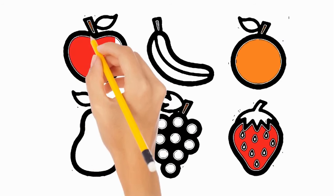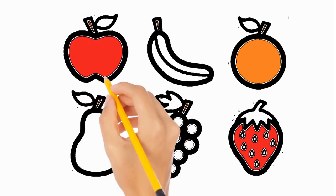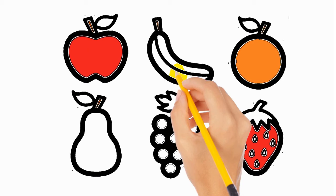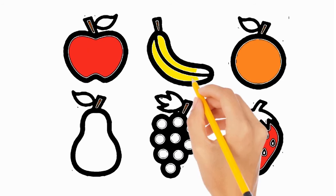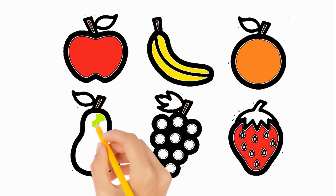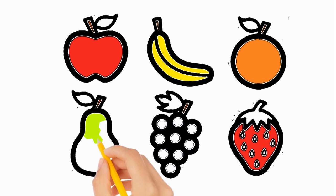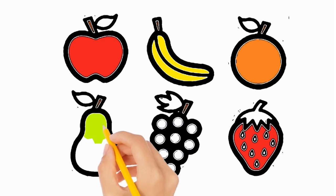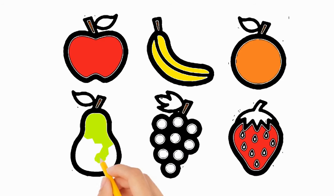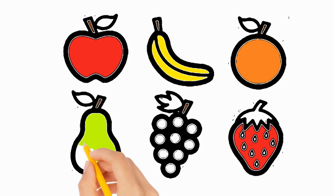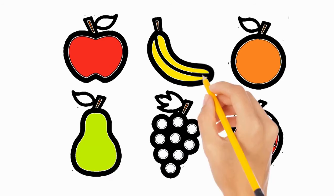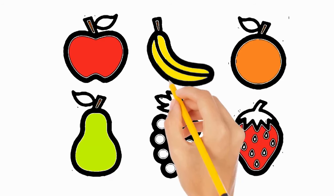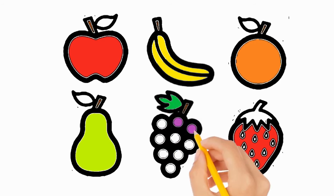A, B, C, D, E, F, G, H, I, J, K, L, M, N, O, P, Q, R, S, T, U, V, W, X, Y, and Z. Now I know my ABCs, next time won't you sing with me.